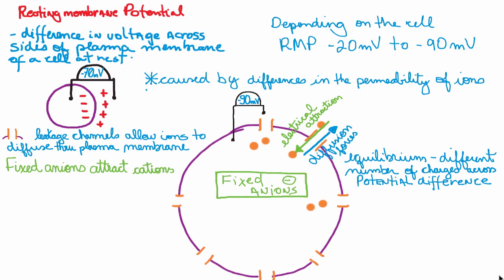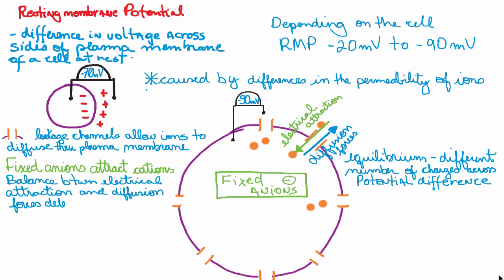If you were talking about potassium only and you put a voltmeter there, you'd actually read minus 90 millivolts across the plasma membrane. There's a potential difference, and that difference corresponds to minus 90 millivolts. Eventually, this balance between the electrical attraction and diffusion forces will determine the distribution of ions across the membrane.